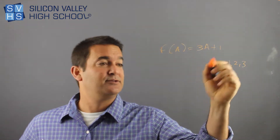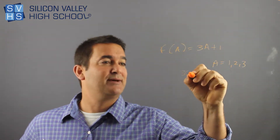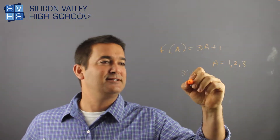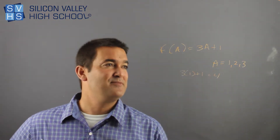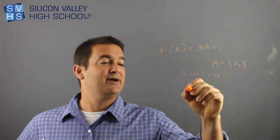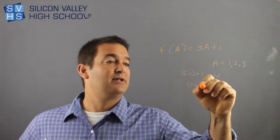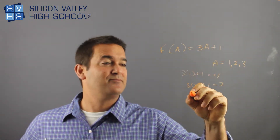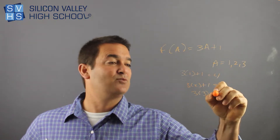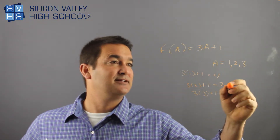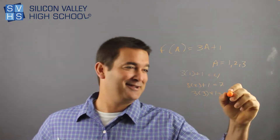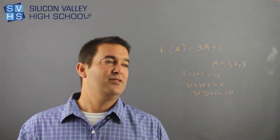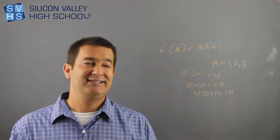First, put a 1 in — 3 times 1 plus 1 — that is 4. Then put a 2 in: 3 times 2 plus 1 is 7. Then put a 3 in: 3 times 3 plus 1 is 10. So those are really easy to solve — the function of this letter is going to match this letter, and that's all you do.